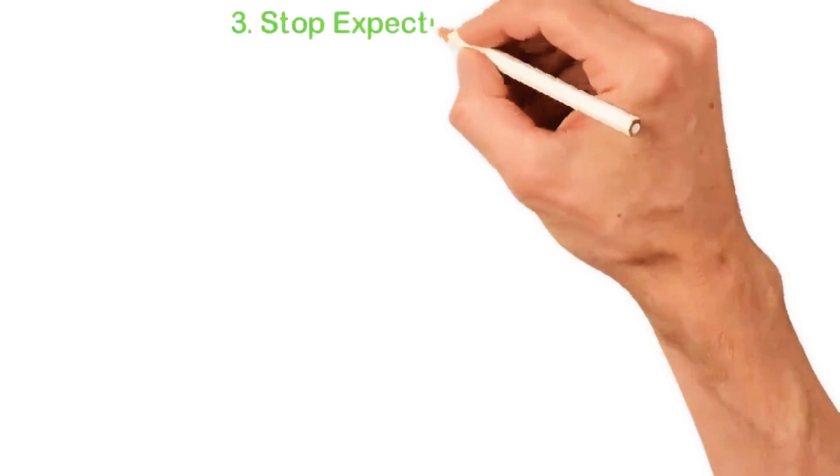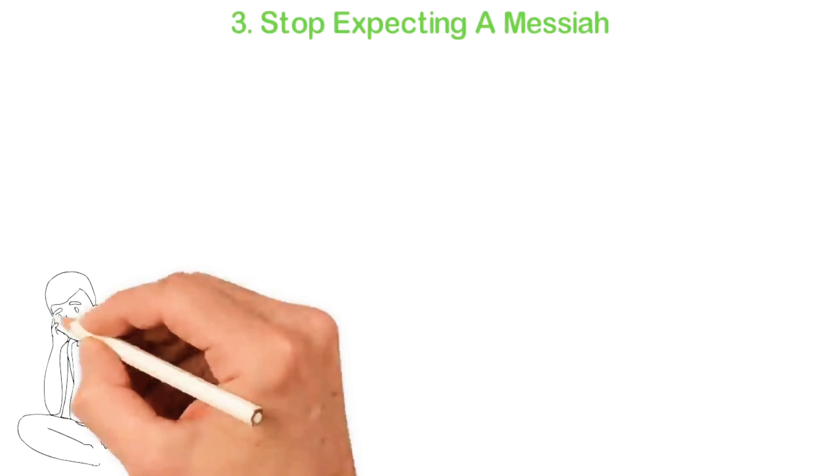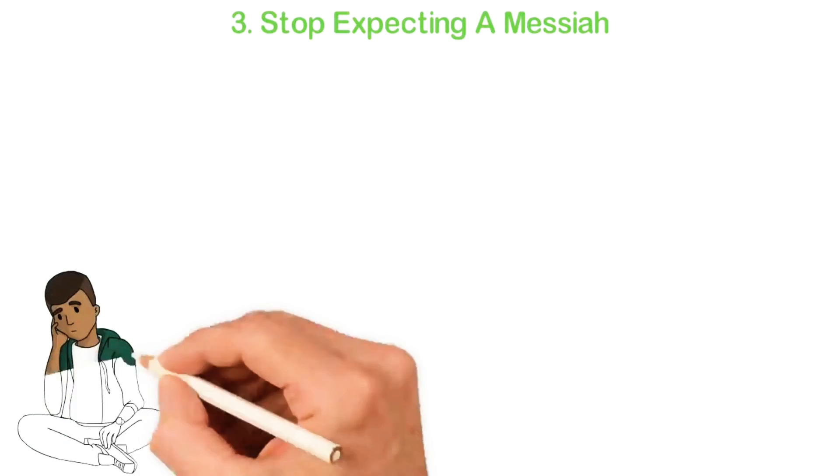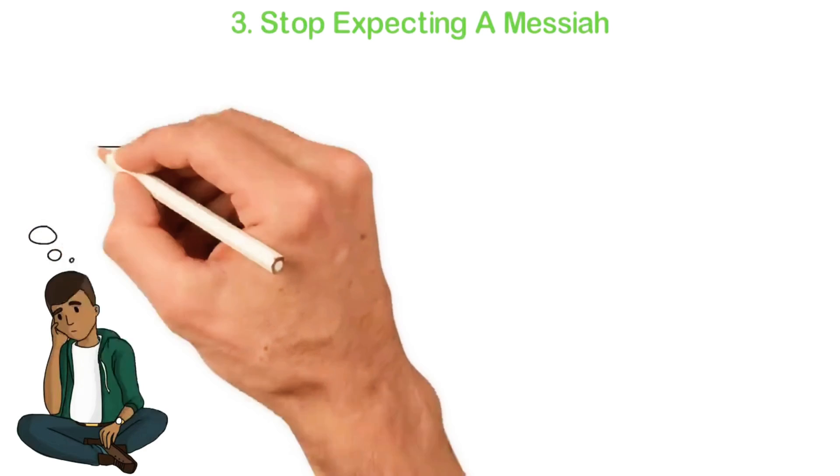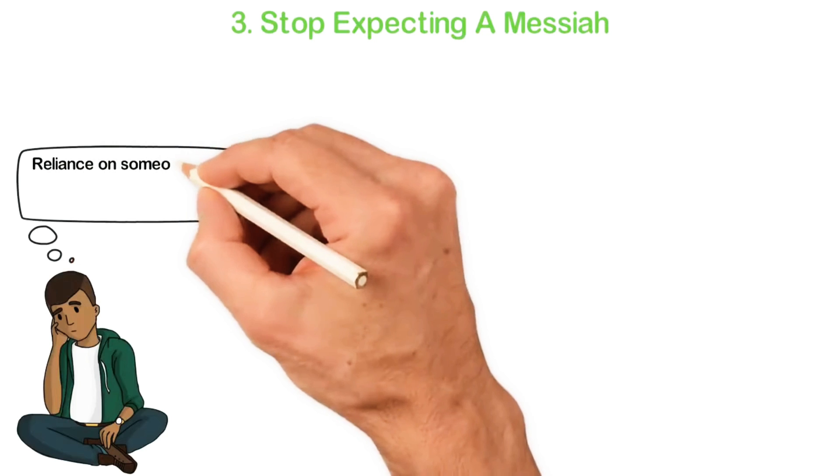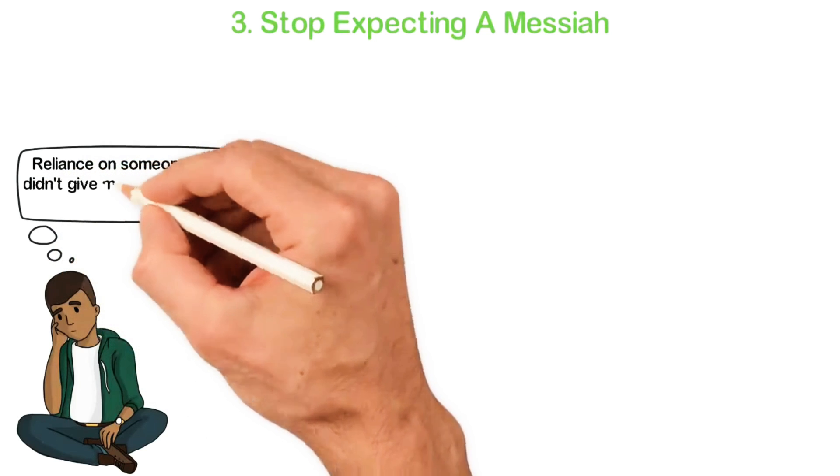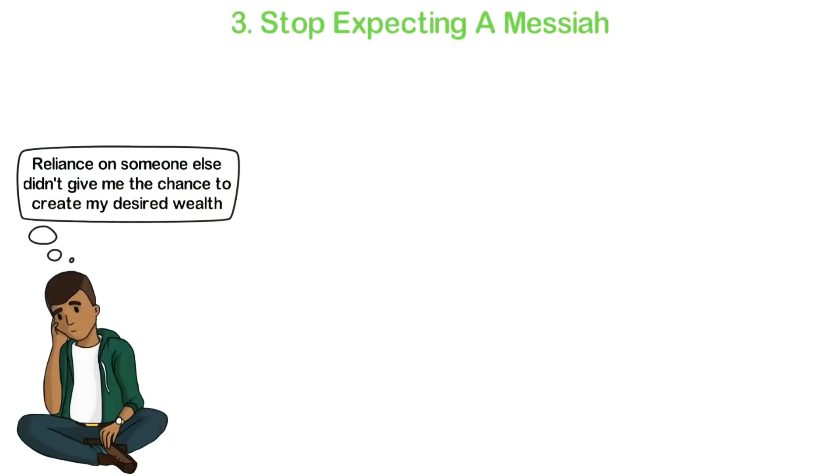Third, stop expecting a Messiah. We were all trained to expect a Messiah, someone to give us a job, someone to fix our roads, economy and life, someone to take care of us when we are old and other things. Well, if you really want to be a successful entrepreneur, you have to stop expecting someone else to fix your life. You don't only have to be independent, you have to become a Messiah.